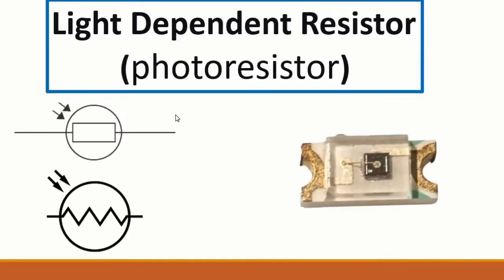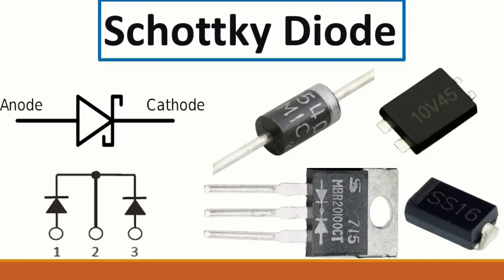Then we have the light-dependent resistor (LDR). It is the opposite of the LED - for the LED, the arrows go outward, but here the arrows go inward. We also call it a photo resistor or LDR - light-dependent resistor.